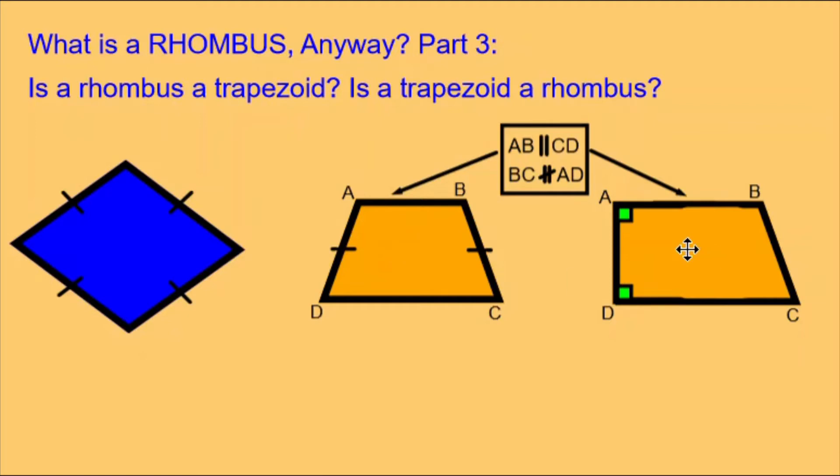The one on the right is a right trapezoid. It has two internal 90 degree angles. Side AB is parallel to side CD. Side AD is not parallel to side BC. This is a trapezoid.